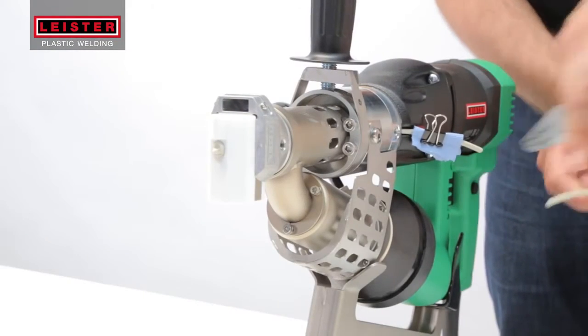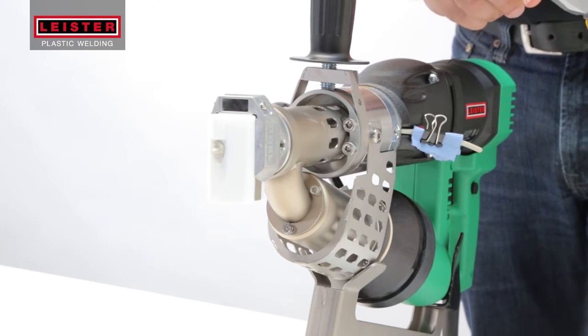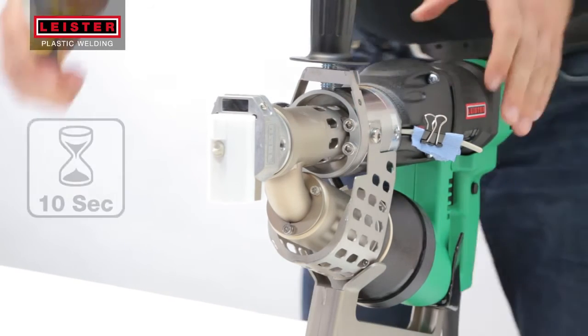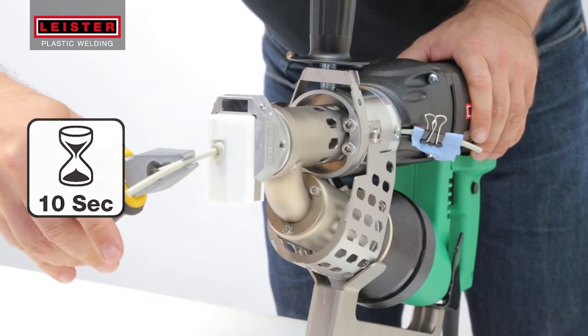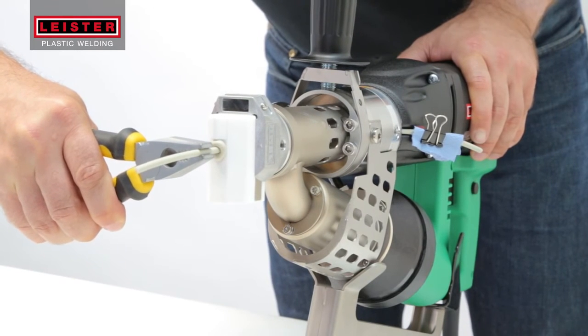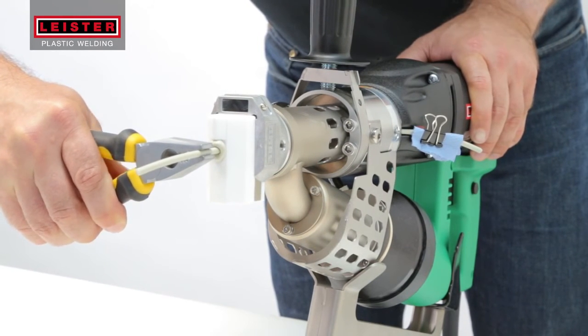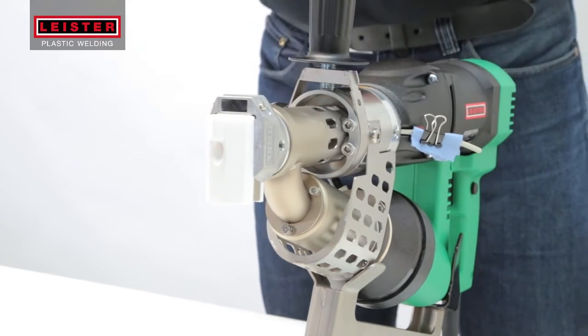Before changing the welding shoe or cooling down the tool, trim the welding rod leaving about a 6 inch length in the feed mechanism. And with another 6 inch length of welding rod, take a pair of pliers and carefully push the rod approximately 1 centimeter into the hole of the welding shoe and hold it in the molten plastic for about 10 seconds.